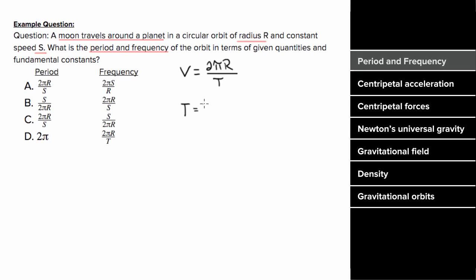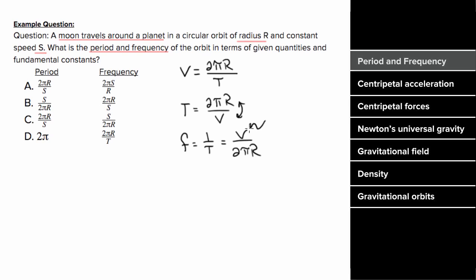The period here would be equal to two pi r over the speed. And since frequency is one over the period, if we take one over this quantity, we just flip the top and bottom, giving us the speed over two pi r. We can't leave our answer in terms of v — we were given s — so the period is two pi r over s, and the frequency is s over two pi r.